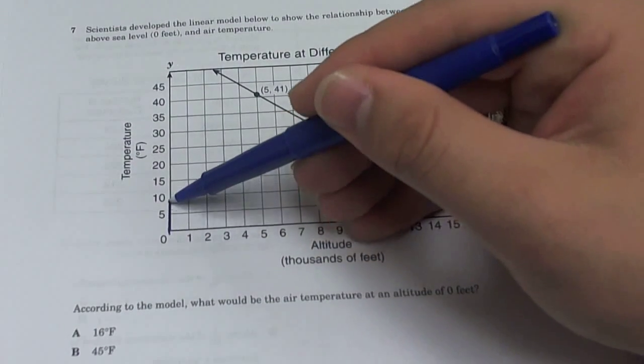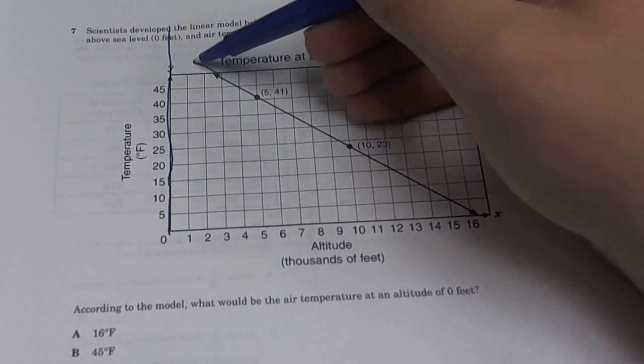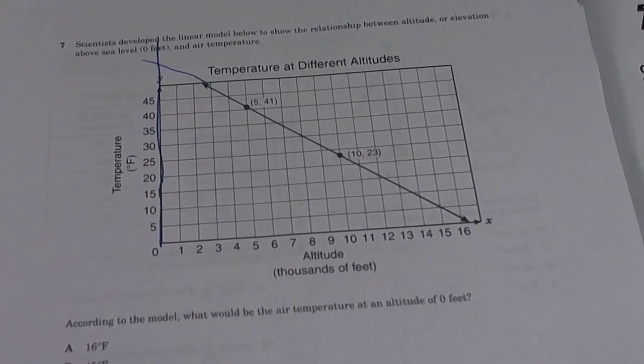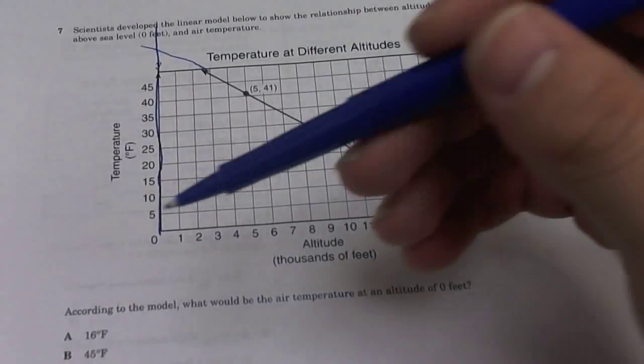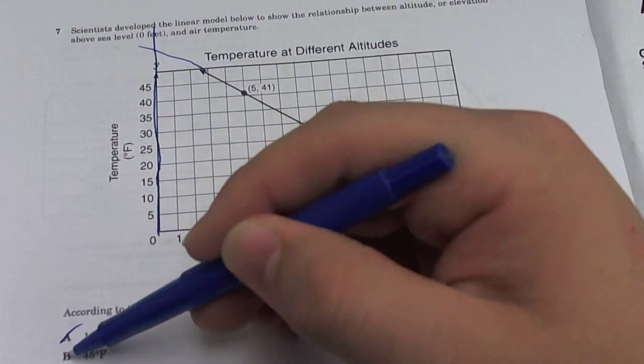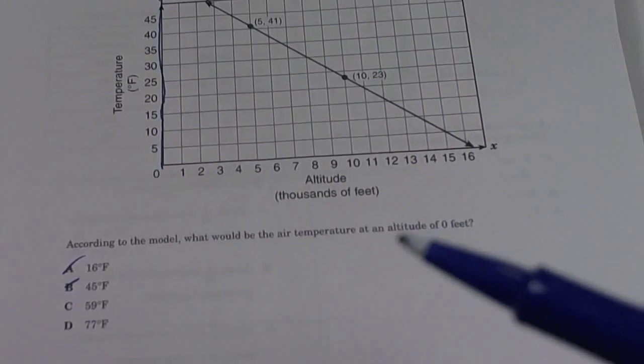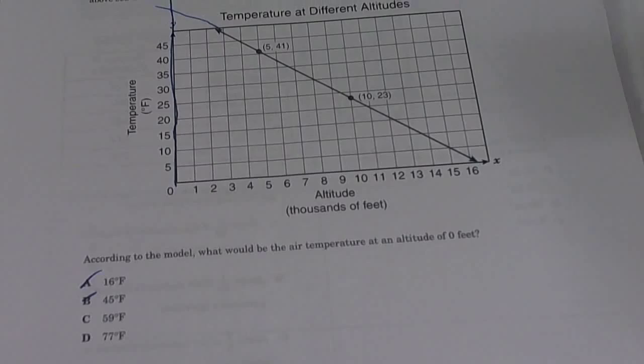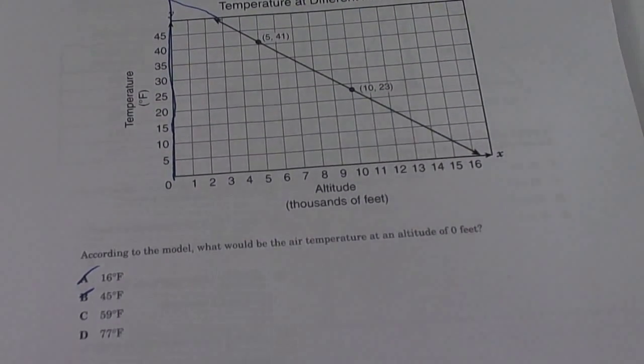Zero, so it's gonna go all the way up here. We want to find out what that point is, so we look at our answers. Right away we can cancel out 16 and 45, so we're left with 59 and 77. All right, so they give us two points: (5, 41) and (10, 23).